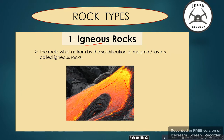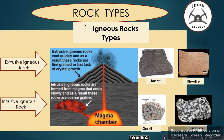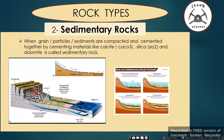When lava or magma solidifies, igneous rock is formed. Igneous rocks are divided into two types. Extrusive igneous rocks are those formed when magma comes to the earth's surface and solidifies — they are fine-grained due to quick cooling, like basalt and rhyolite. Intrusive igneous rocks are formed when magma solidifies inside the earth and are coarse-grained, like granite and gabbro, due to slow cooling.